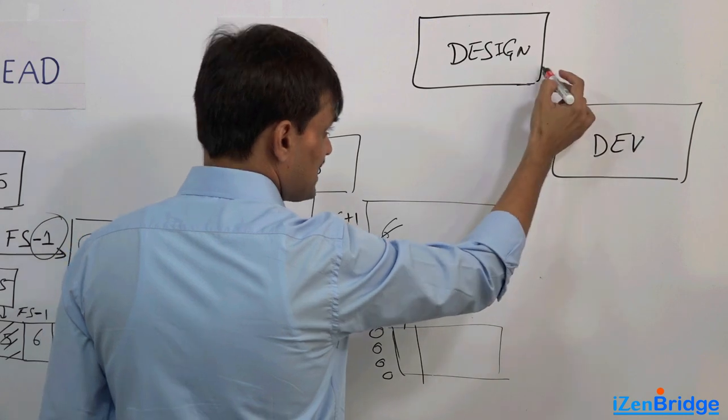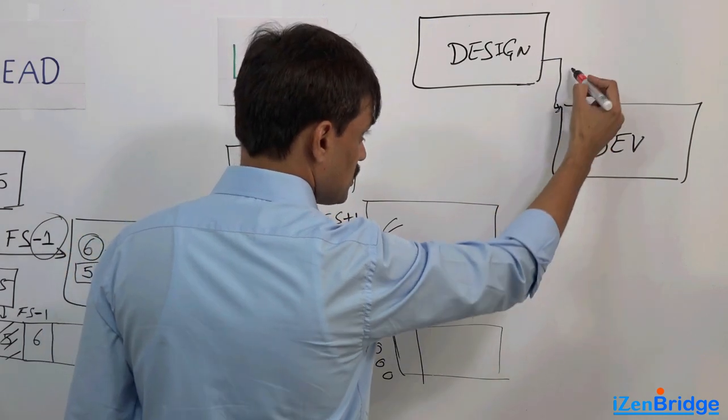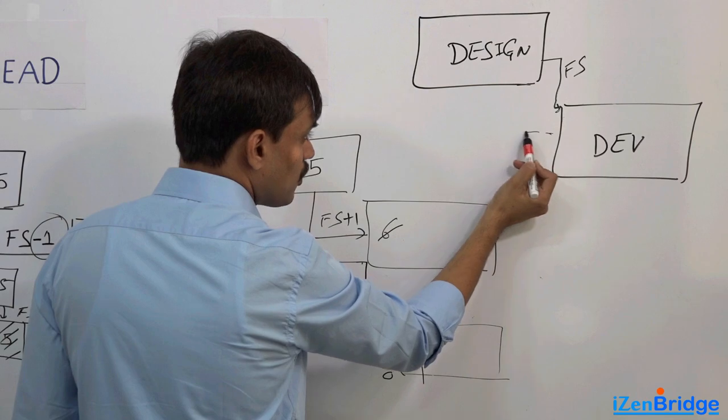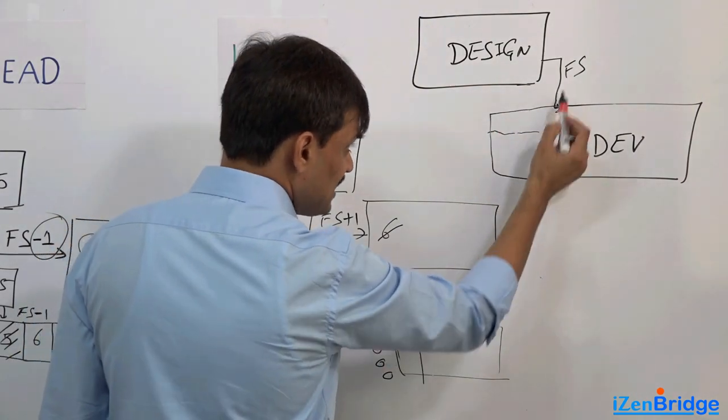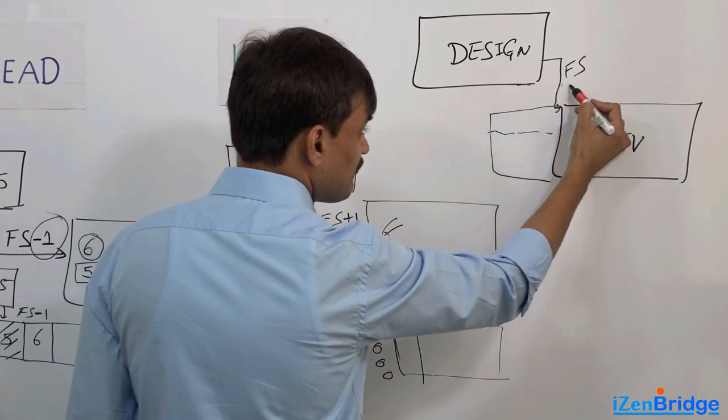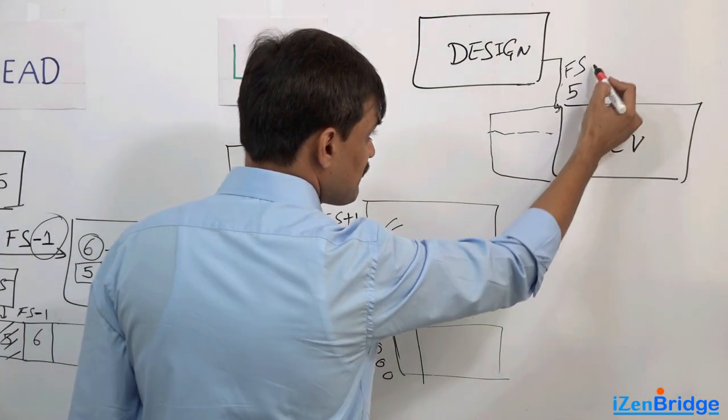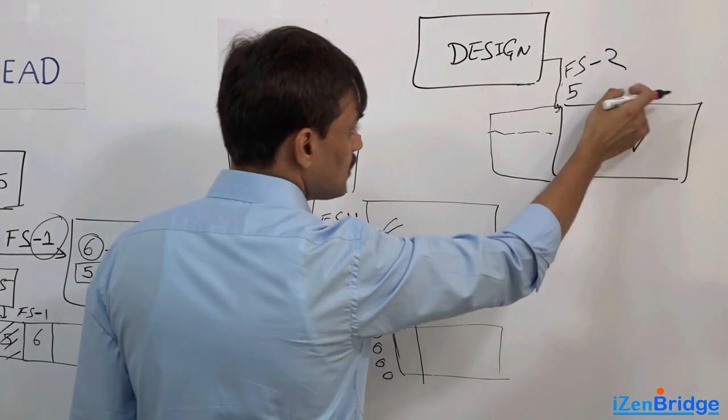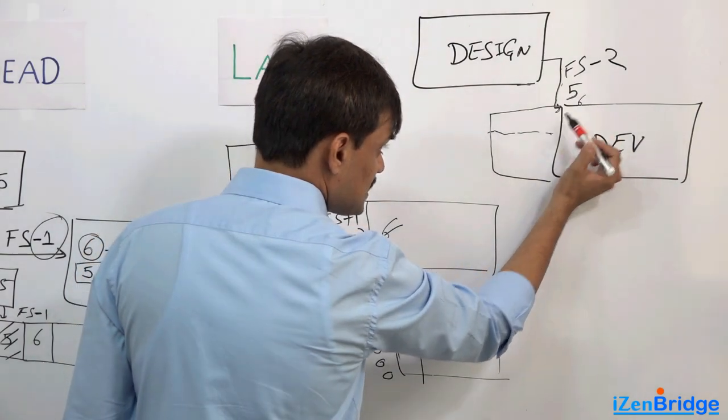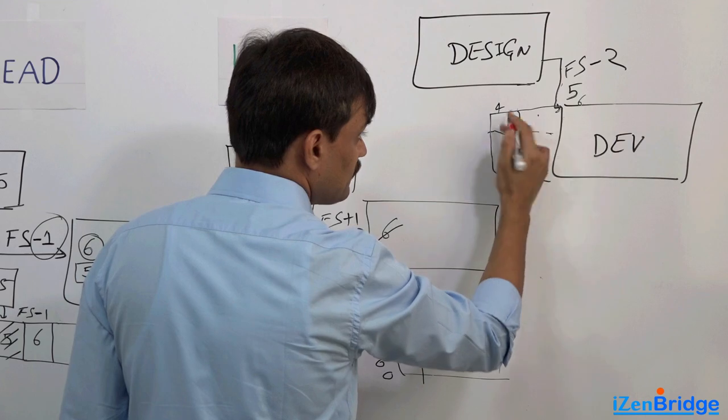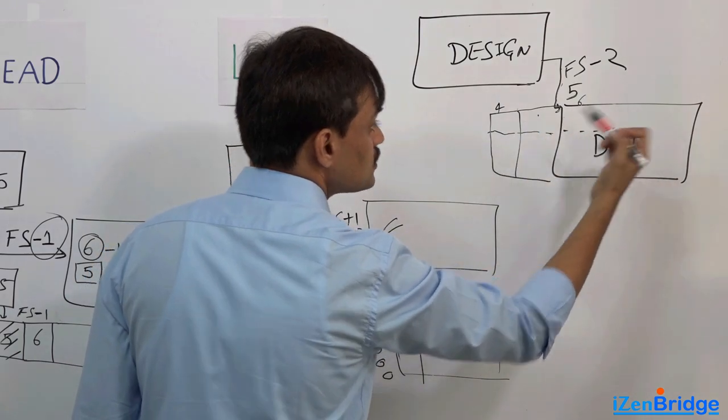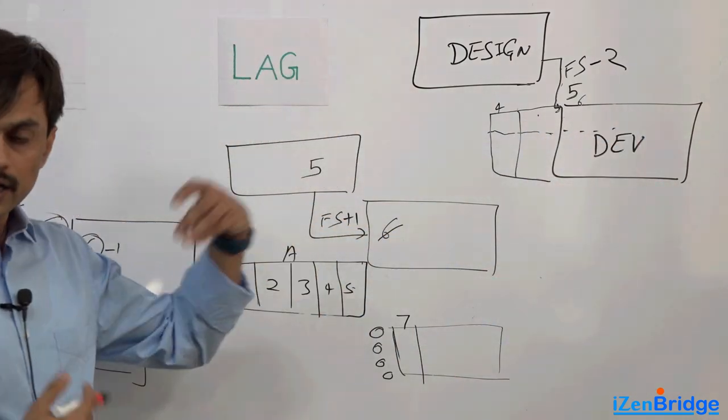Now it has a finish to start relationship. But sometimes you think okay, some little bit of parallel can happen. So when it is expected to finish on day five, if I say FS minus two, it means rather than starting on day six, I can start on day four. So there will be day four and five it will run in parallel, and day six onwards it will be a normal thing.